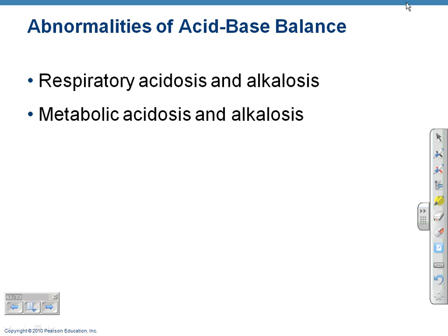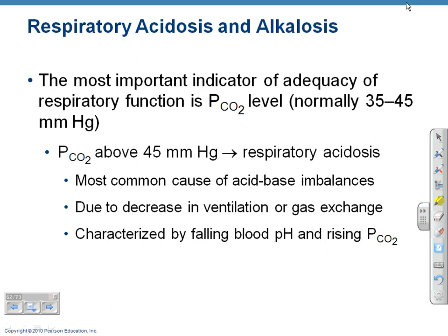Let's talk about the differences between respiratory acidosis/alkalosis and metabolic acidosis/alkalosis. The most important indicator of respiratory function is CO2 pressure — how much CO2 do you have? Hyperventilation and hypoventilation can change CO2 levels. Too much CO2 makes blood too acidic; not enough CO2 makes it too alkaline, because removing CO2 shifts the whole buffer system. Respiratory acidosis and alkalosis is the most common cause of acid-base imbalances, usually due to a decrease in ventilation or gas exchange.